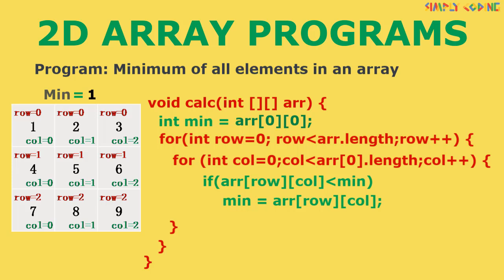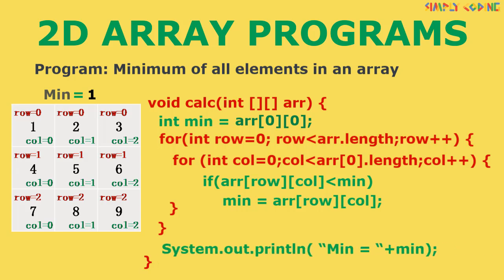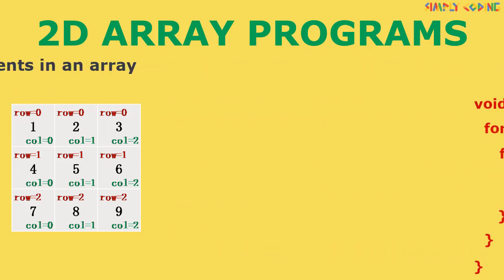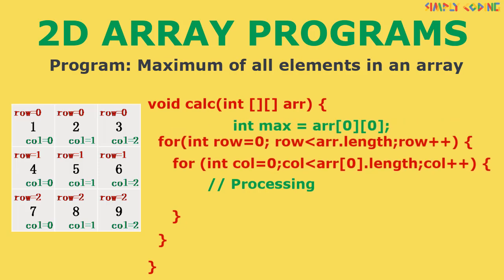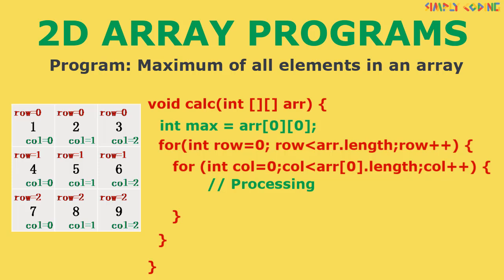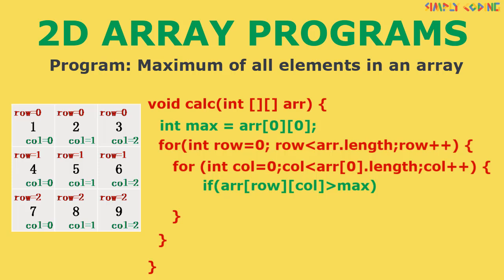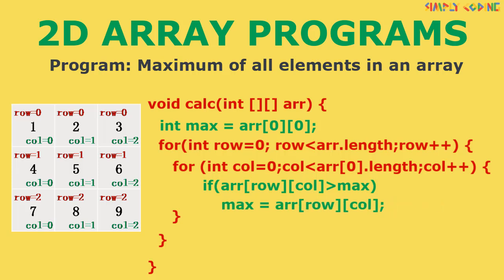Once we have traversed the entire array, we print the final min value found. The program for maximum is done the same way — we declare the max value outside the loop. Inside the loop, we check if any array element is greater than the max value, and if yes, we set max to that element's value. Once traversal is complete, we print the max value.